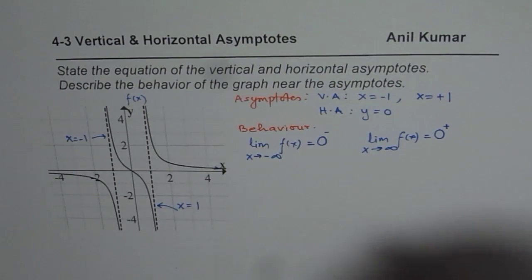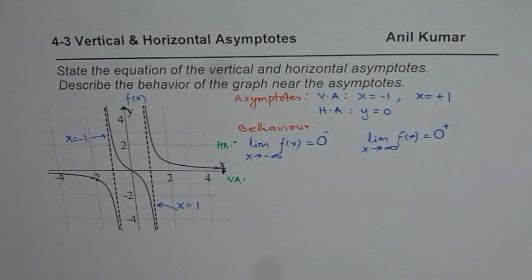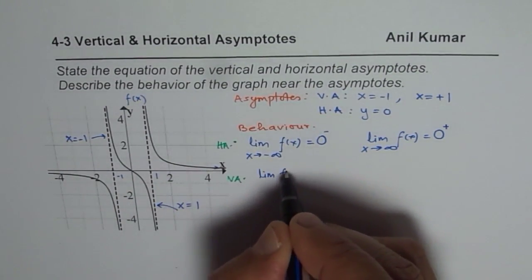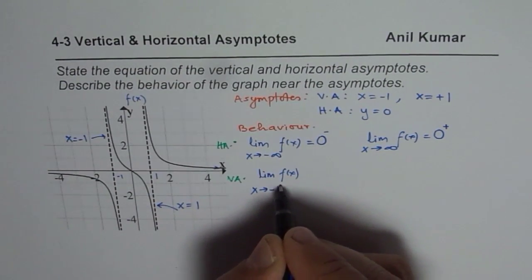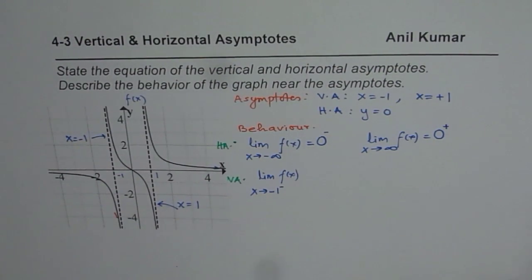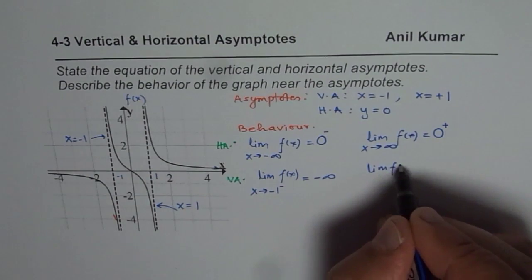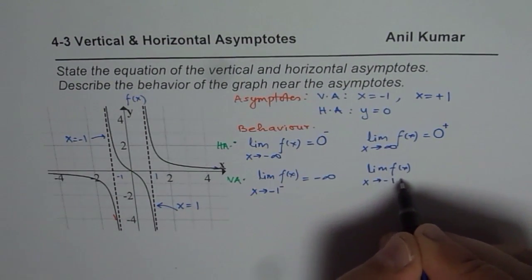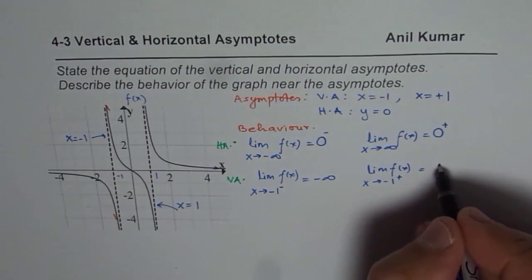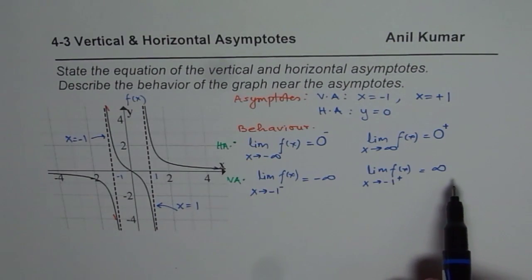So what we found here is behavior near the horizontal asymptote. Now let us analyze the vertical asymptotes, which are at minus one and plus one. The limit of the function as x approaches minus one from the negative side — that means the left side — is negative infinity. And the limit of the function as x approaches minus one from the right side is positive infinity. Near a vertical asymptote, you will always be approaching either negative or positive infinity.